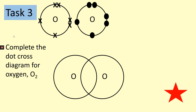Task three: you need to complete the dot-cross diagram for oxygen. I've already started by drawing out the two outer shells. Oxygen is in group six so it has six electrons. You need to look at where to put your lone pairs of electrons and the pairs you already have. Pause the video and have a go.